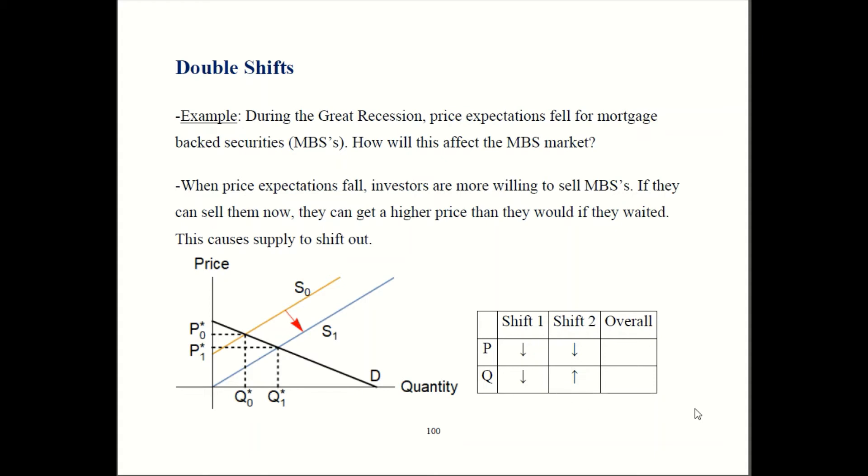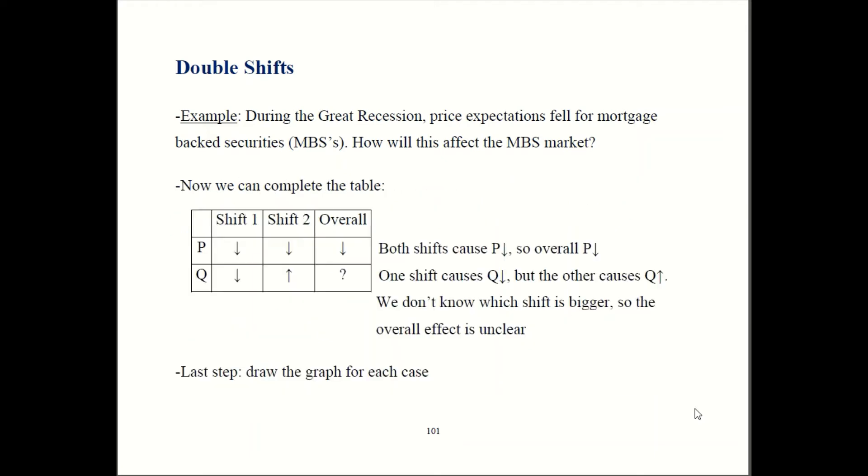So that's how we do the individual shifts. Now we've got to put them together. So for price, the first shift caused price to fall. The second shift also caused price to fall. That means price has to be going down overall. So in general, when the shifts go in the same direction, then the effect overall is clear.